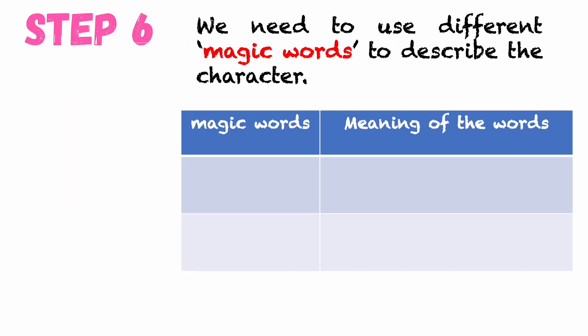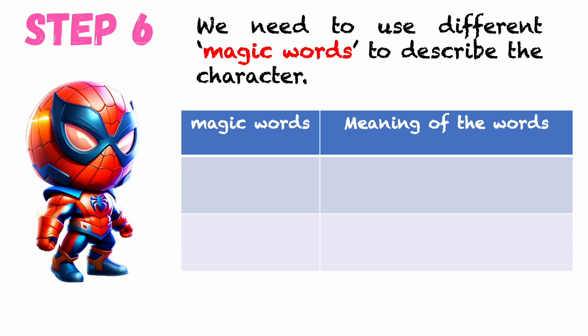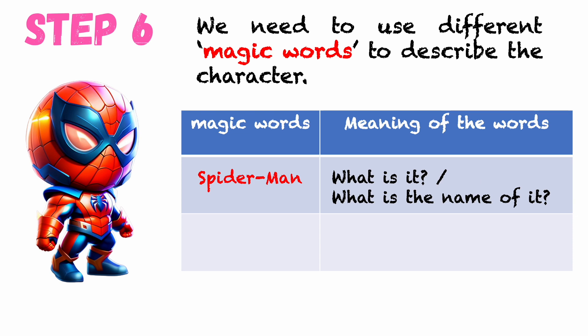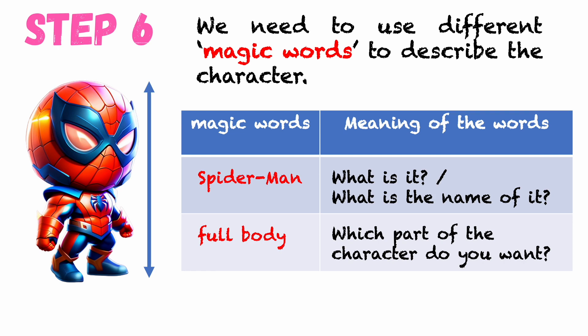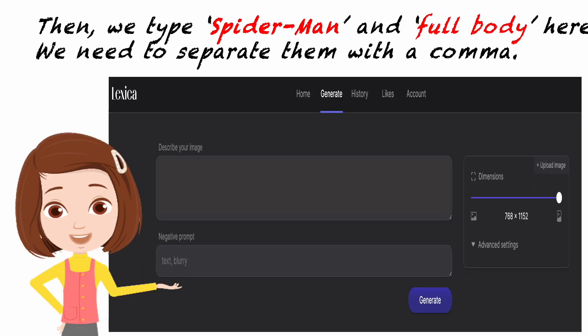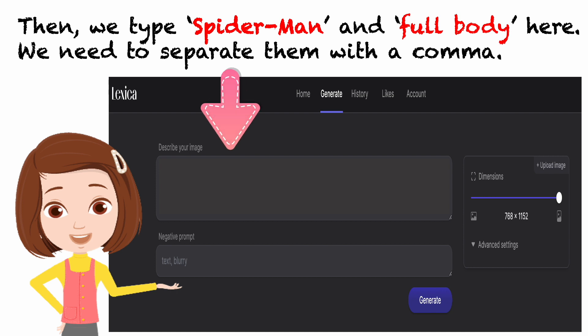We need to use different magic words to describe the character. First, we will choose 'Spider-Man,' which is the name of the character. Then we will use 'full body,' because I want to draw the whole body, not just the head or the upper part of the figure. Type 'Spider-Man' and 'full body' here, separated by a comma.